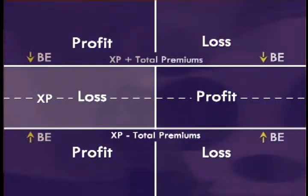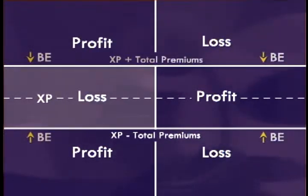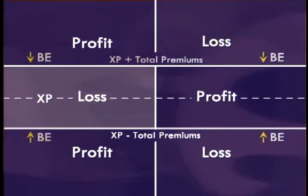To understand the basic features of the short straddle, recall that long and short positions are opposite sides of the same contract. The long call and the short call both had the same break-even point, but where they made and lost money was opposite. We can extend that reasoning: a short straddle has the same break-even points as a long straddle — strike price plus total premiums and strike price minus total premiums — but what's different is where you make and lose money.